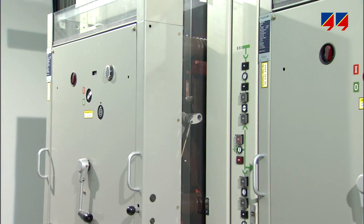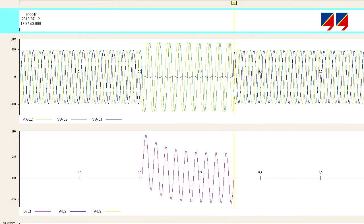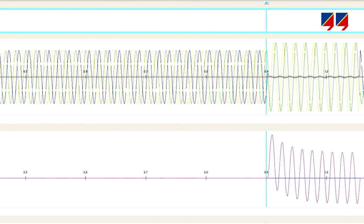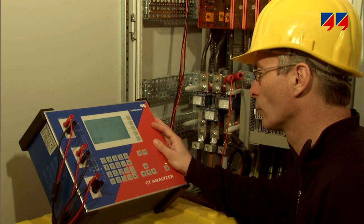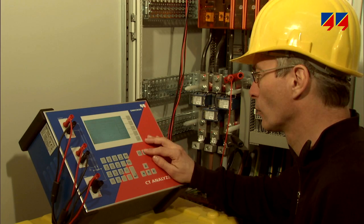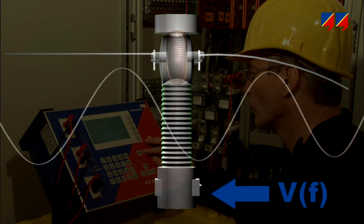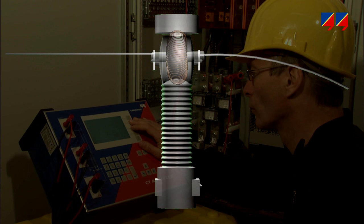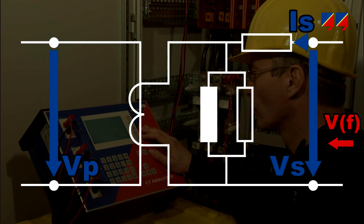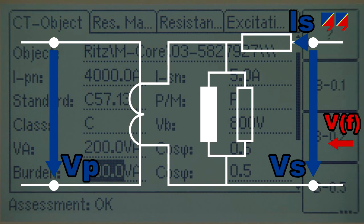Additionally, many of the parameters characterizing a CT's transient behavior — for instance during auto-reclosure cycles, such as secondary time constants or remnants — cannot be determined with classical test benches. CT Analyzer allows the limitations of the various traditional methods to be overcome. It opens the black box through secondary injection with variable frequency and a patented low-voltage, low-frequency method for excitation measurement. It identifies all the parameters of the CT equivalent circuit diagram, and thus accurately determines the CT's behavior for protection and metering applications.